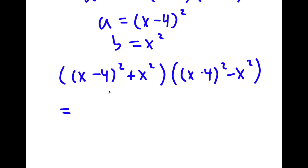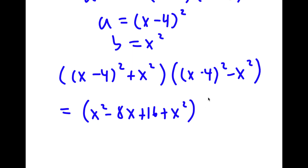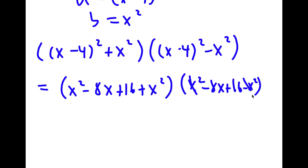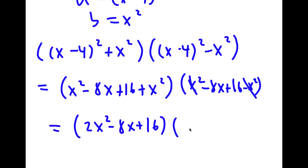And (x minus 4) squared is simply equal to x squared minus 8x plus 16. So I have x squared minus 8x plus 16 plus x squared, and over here I have x squared minus 8x plus 16 minus x squared. These two cancel out, and these two add up. So I have (2x squared minus 8x plus 16) times (negative 8x plus 16), and this is all equal to 0.